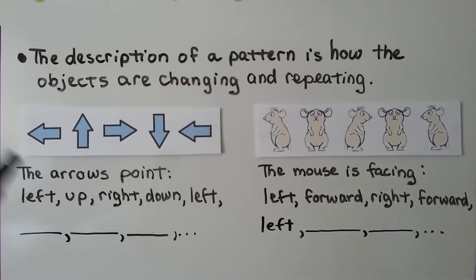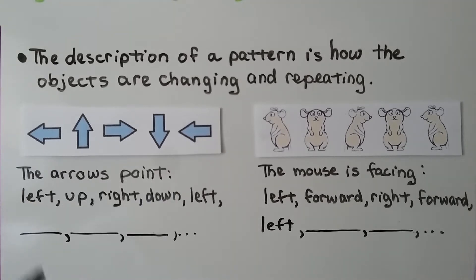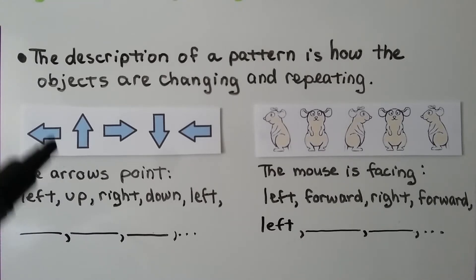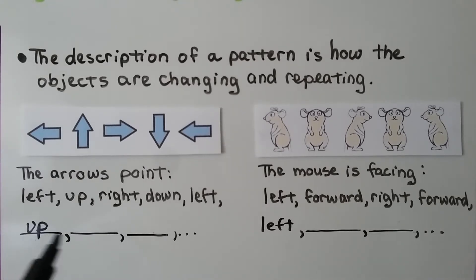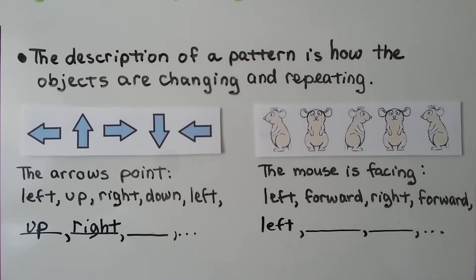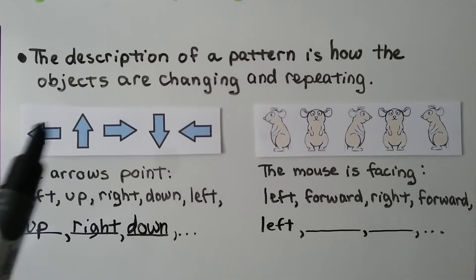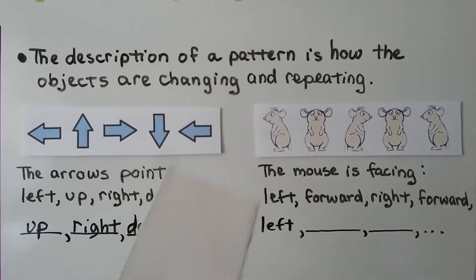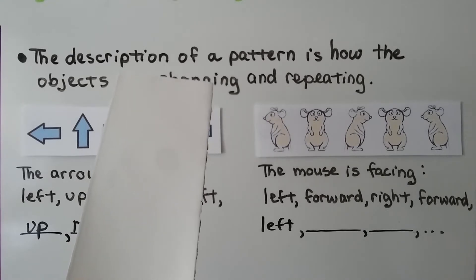We have arrows pointing left, up, right, down, then left again. The next direction must be up, then right, then down, and the pattern keeps repeating. If we only had the first two arrows — left and up — it would be very hard to know what the pattern is. We don't have enough objects to identify the pattern with just two items.